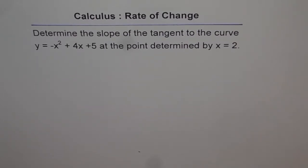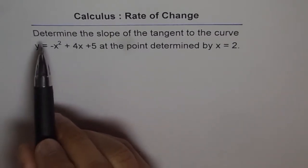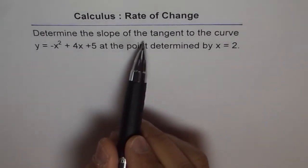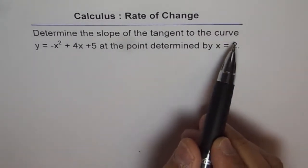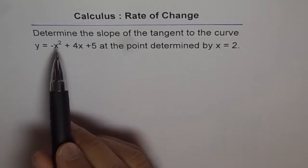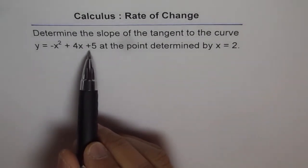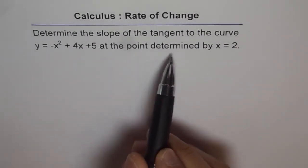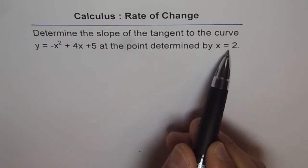Here we have a polynomial function. The question is: determine the slope of the tangent to the curve y = -x² + 4x + 5 at the point determined by x = 2.